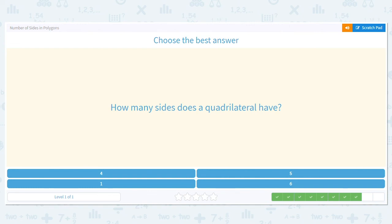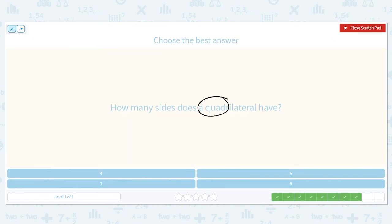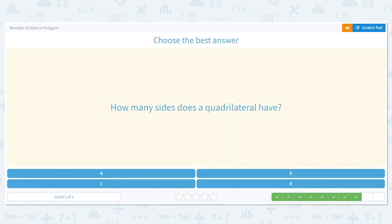Quadrilateral. How many sides does it have? We know it's four. What gives it away in the word quadrilateral? Quad. Quad means four.